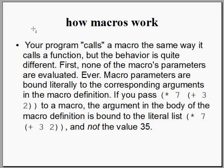Let's see how macros work. Your program calls a macro the same way it calls a function, but the behavior is quite different. First, none of the macro's parameters are evaluated. However, macro parameters are bound literally to the corresponding arguments in the macro definition. If you pass an argument to a macro, the argument in the body of the macro definition is bound to the literal list and not the value 35.